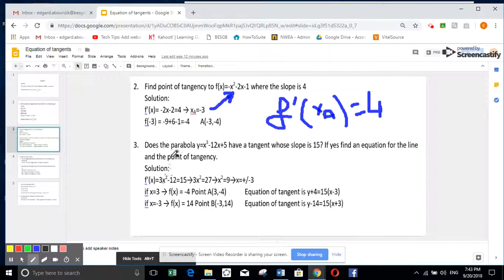So it's very simple. The parabola x cube minus 12x plus 5 has a tangent whose slope is 15. Find the equation and the point of tangency. It's the same story as number 2. f prime of x, which is 3x squared minus 12, equal to 15. x squared is 9. x is plus or minus 3.